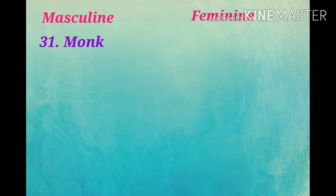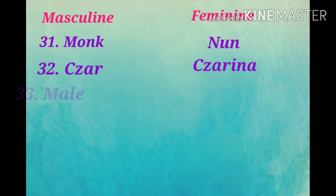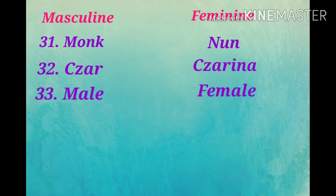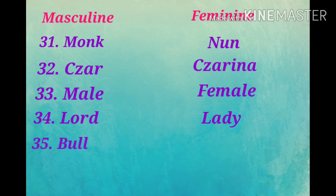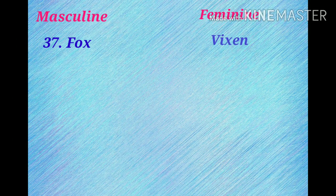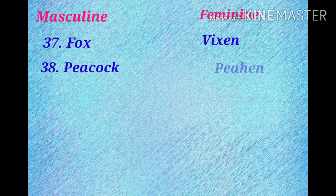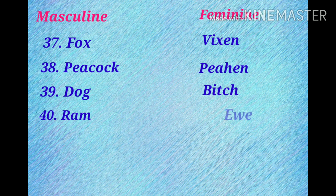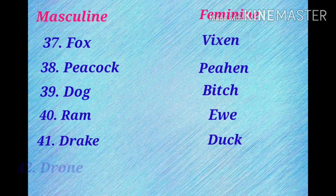Monk, nun. Tsar, tsarina. Male, female. Lord, lady. Bull, cow. Horse, mare. Fox, vixen. Peacock, peahen. Dog, bitch. Ram, ewe. Drake, duck. Drone, bee.